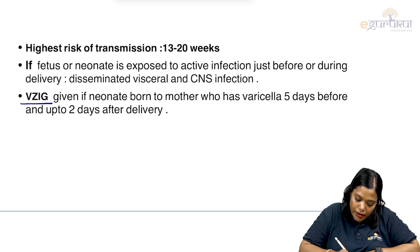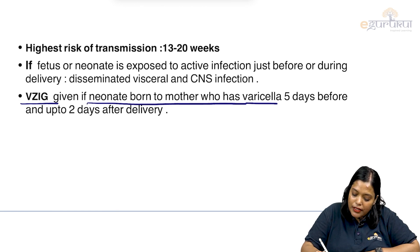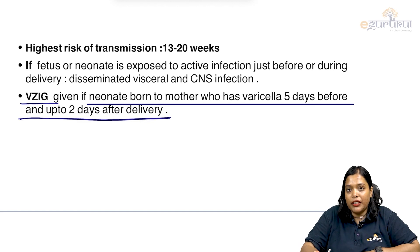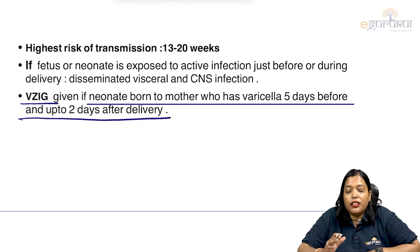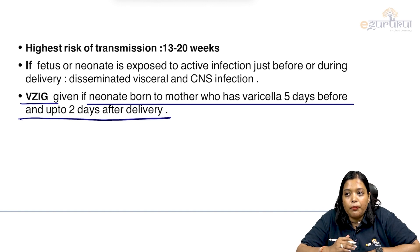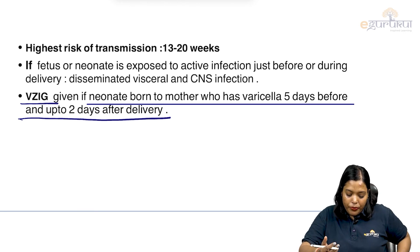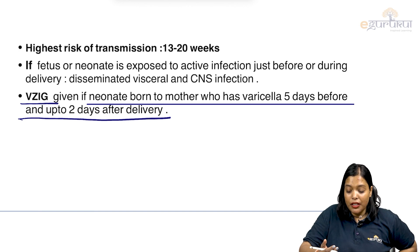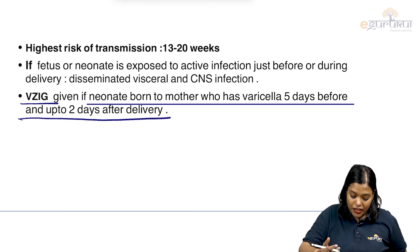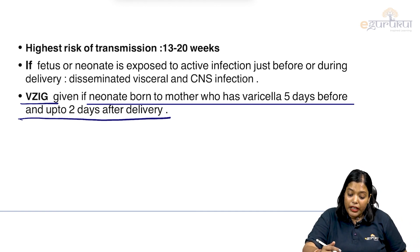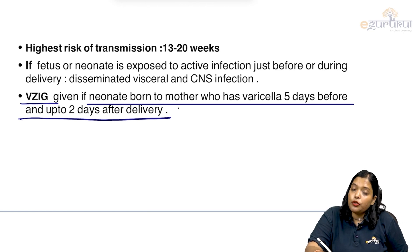Varicella zoster immunoglobulin should be given if the neonate is born to a mother who has varicella 5 days before and up to 2 days after delivery. It is better to prolong the pregnancy for 7 days so that the mother starts developing antibodies, which are then transmitted to the baby rather than delivering with active infection.